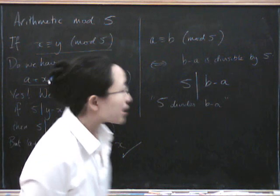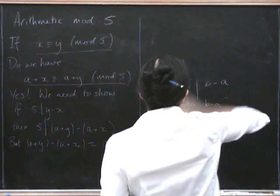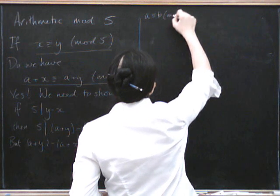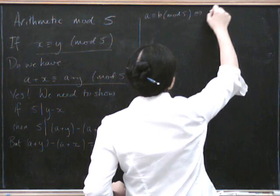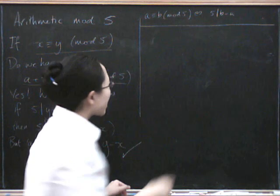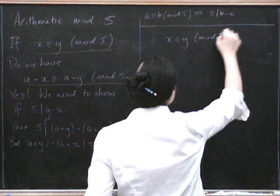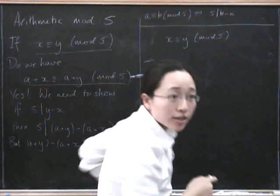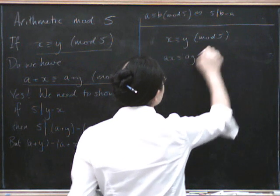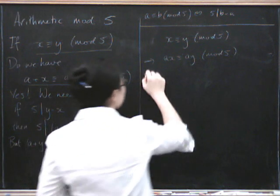So now let's try the same for multiplication. Perhaps I'll write this up again, but a bit smaller up here. So a congruent to b mod 5 means that 5 divides b minus a. Okay, so now let's try x is congruent to y mod 5. Now we can multiply both sides by a. We get ax congruent to ay mod 5. So let's prove that.